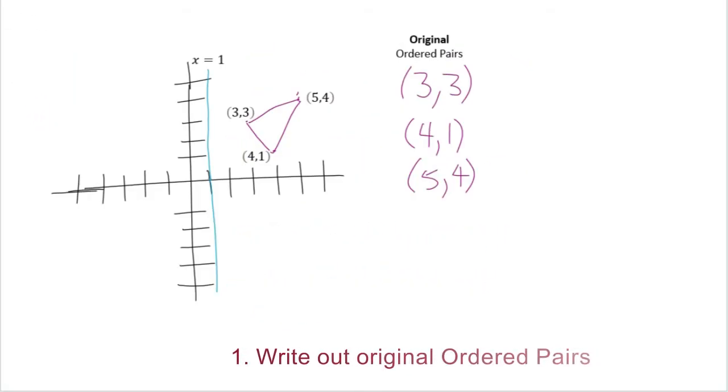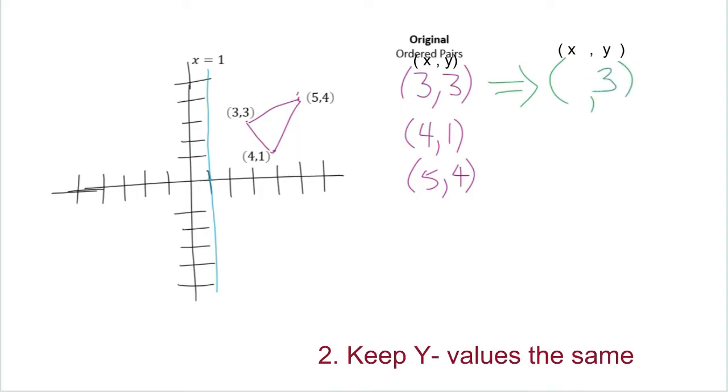Here we have the original ordered pairs: (3,3), (4,1), and (5,4). We are going to set our y values the same. So here it's 3, in this case our y is 1, and in our third point, our y is 4. Now to calculate what our x is...